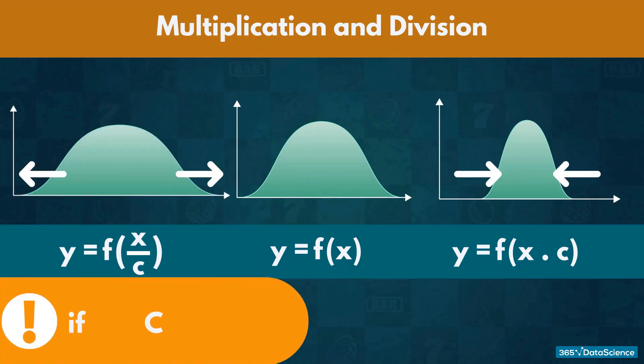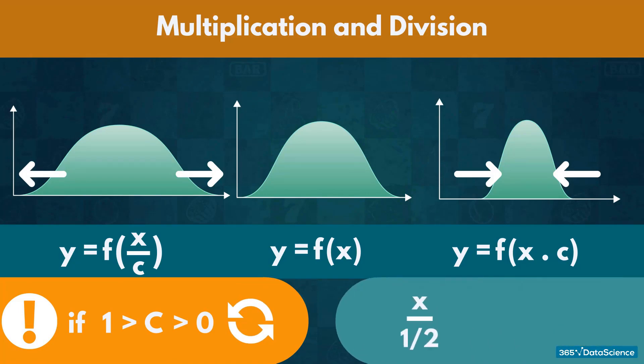However, if we multiply or divide by a number between 0 and 1, the opposing effects will occur. For example, dividing by a half is the same as multiplying by 2, so the graph would shrink even though we are dividing.